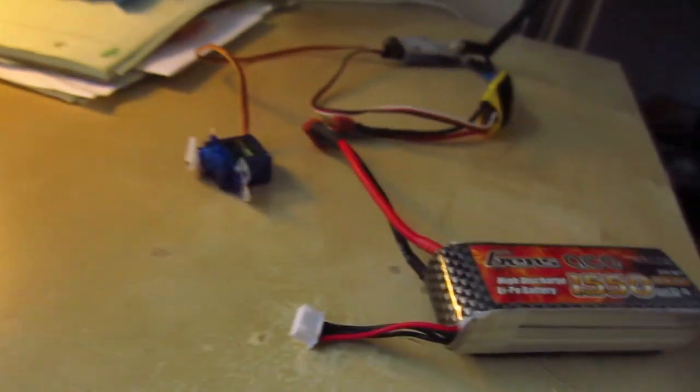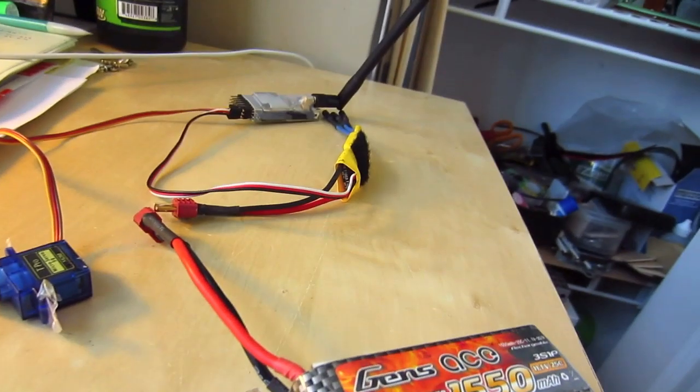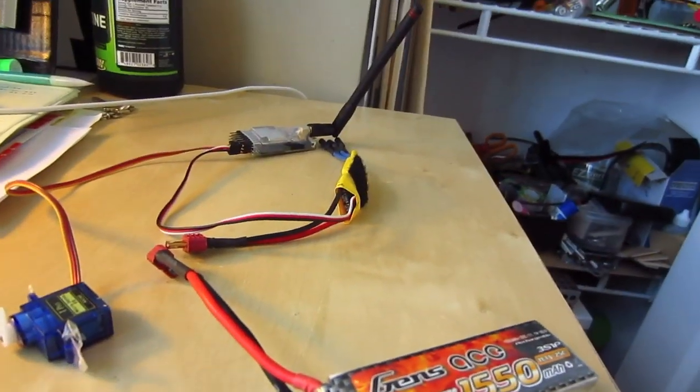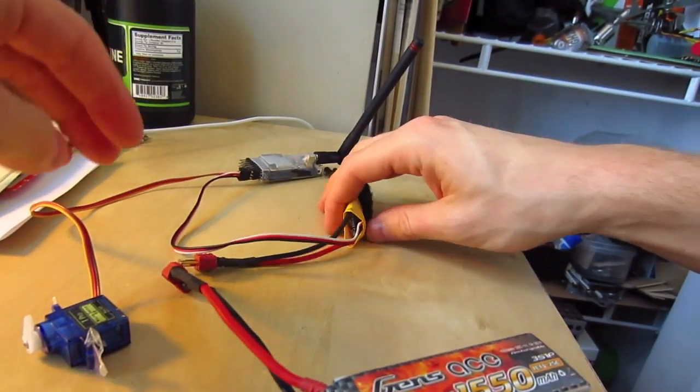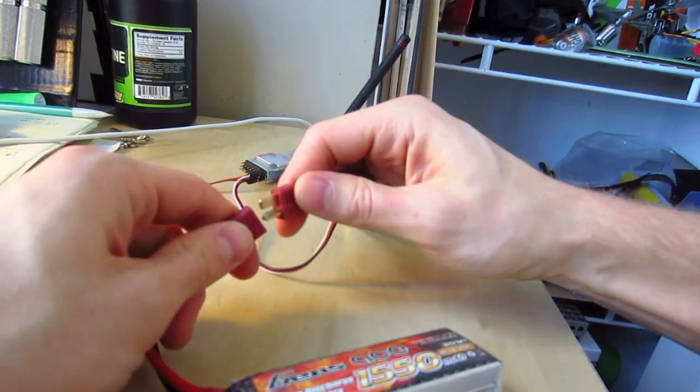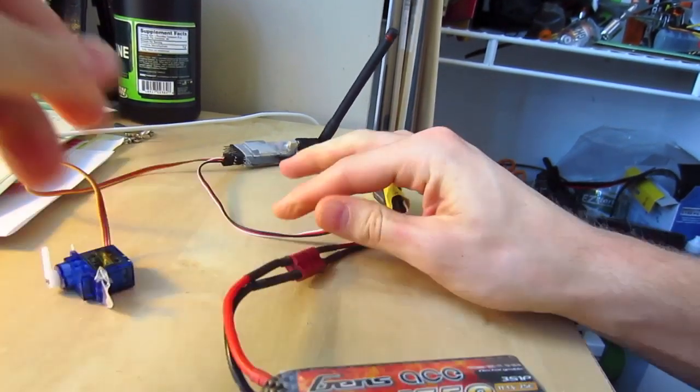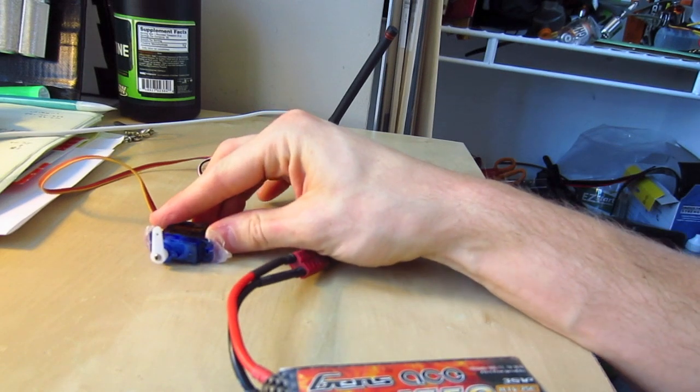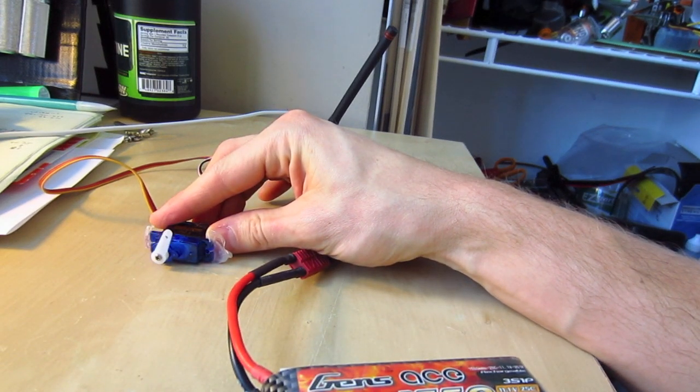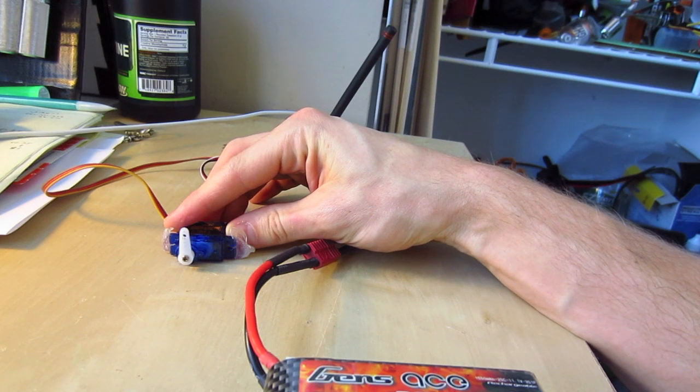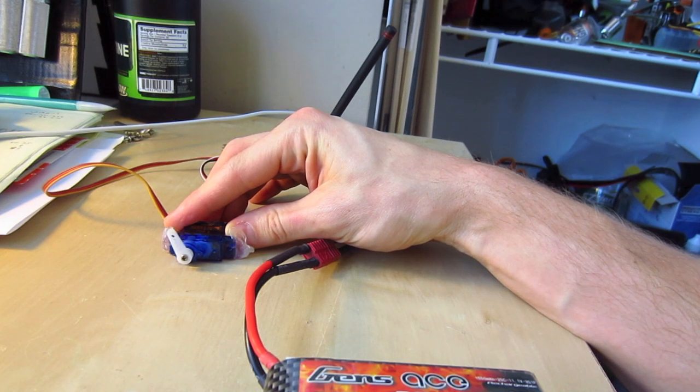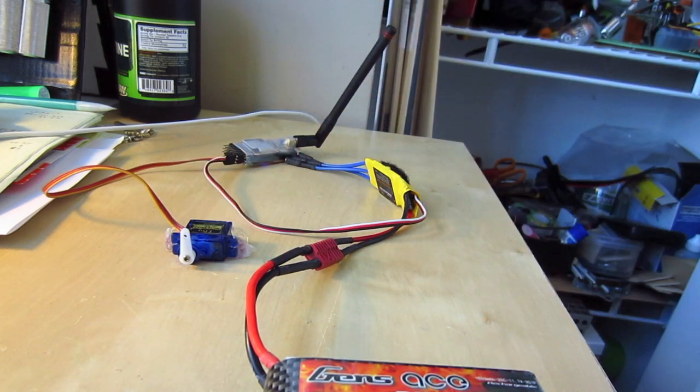To confirm that this works, here is my Dragon Link receiver over here. That's just a different antenna I'm testing the system with. I have it all hooked up. I am going to hook up this. Here is the servo. I have already bound this. I am not going to go through binding here. But you can see, it works. And that is that.